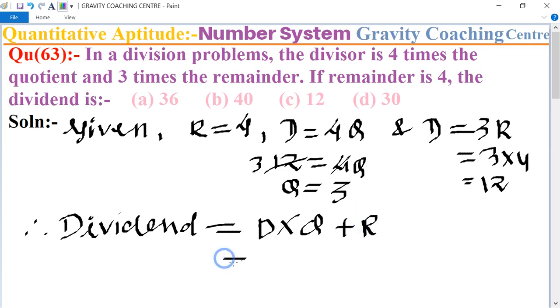Dividend equals divisor is 12 and quotient equals 3 and remainder is 4, so equals 36 plus 4 equals 40. So which is the required answer. Option B is the correct answer.